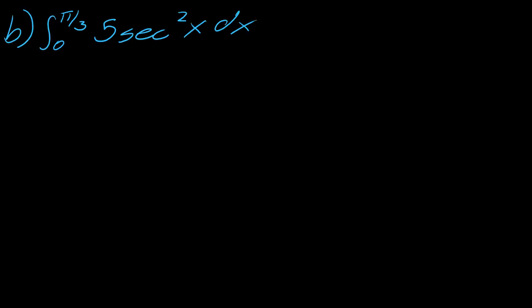So now I've got this definite integral 5 secant squared x from zero to pi over three. Okay, so for this one, if the five is kind of throwing you off, one property of definite integrals is you can just bring it out front and ignore it and just find this definite integral. That's always an option.